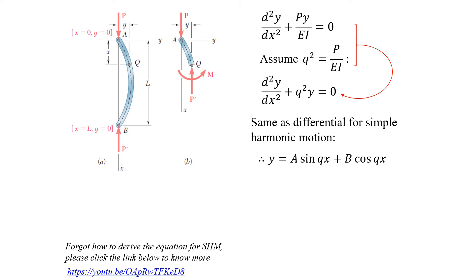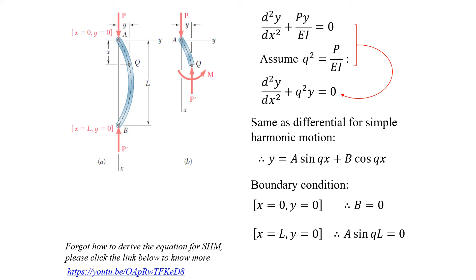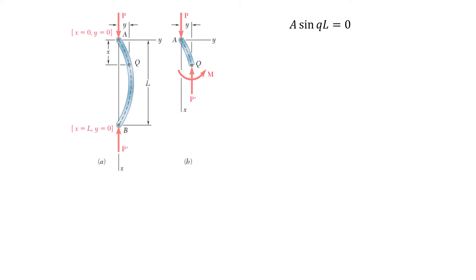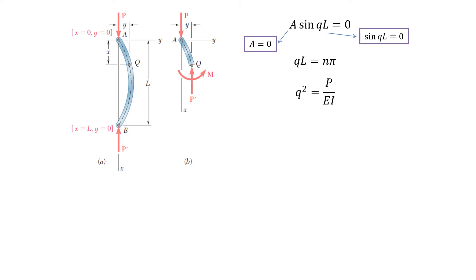For this equation we need boundary conditions at points A and B. For the boundary condition at point A, when x equals 0, y equals 0. Substituting gives B equals 0. For the second boundary condition, when x equals L, y equals 0, giving A·sin(qL) equals 0. Therefore either A equals 0 or sin(qL) equals 0. Taking sin(qL) equals 0, qL must equal n·pi.